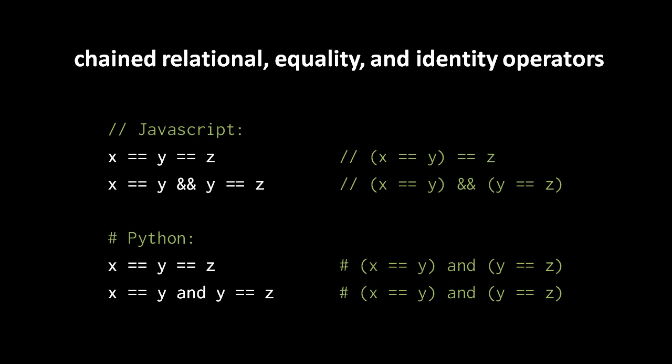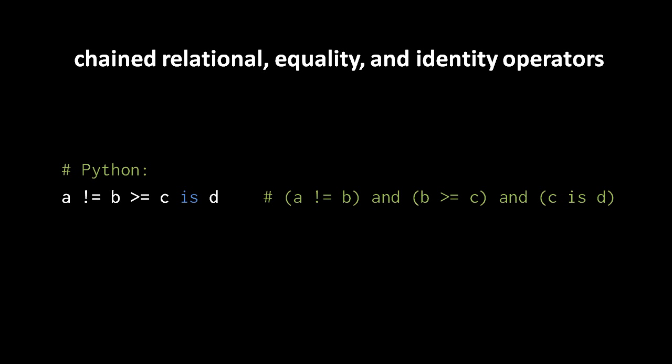This special chaining behavior works not just with relational operators like less-than or greater-than, but also with the equality operator, the not-equality operator, and the identity operator 'is' or 'is not'. You can write 'a != b >= c is d' and Python will magically insert as many 'and' operators as necessary. To suppress this behavior, just use parentheses to make your intention explicit. Personally, I tend to avoid this chaining syntax and make all my 'and' operations explicit, and I believe most Python programmers do the same.